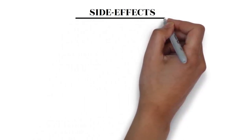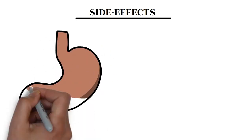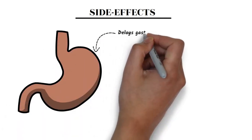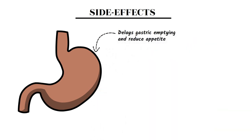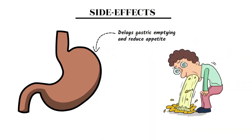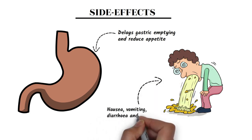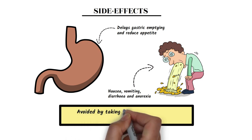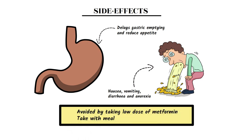As we have previously discussed, metformin delays gastric emptying and reduces appetite. It causes the most common side effects like nausea, vomiting, diarrhea, and anorexia. These side effects can be avoided by taking a low dose of metformin or simply by taking it with a meal.